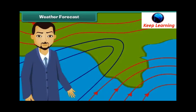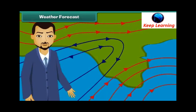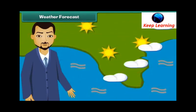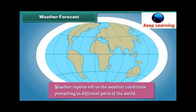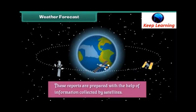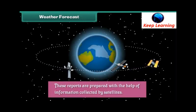Prediction of the future weather conditions of an area is called weather forecast. Weather forecast predicts the temperature, humidity and possibility of rainfalls in a particular area in the near future. Weather reports tell us the weather conditions prevailing in different parts of the world. These reports are prepared with the help of information collected by satellites.